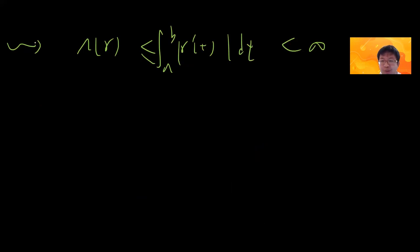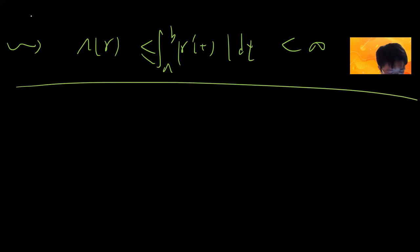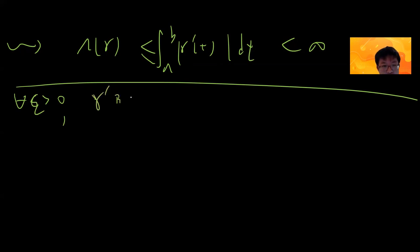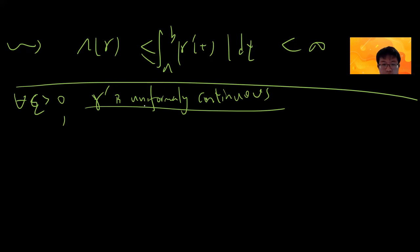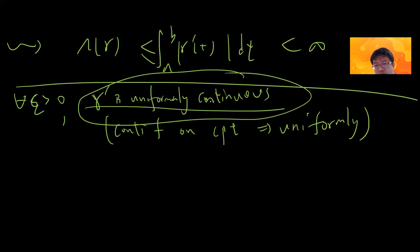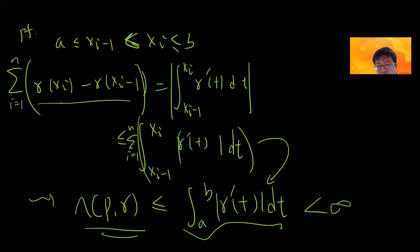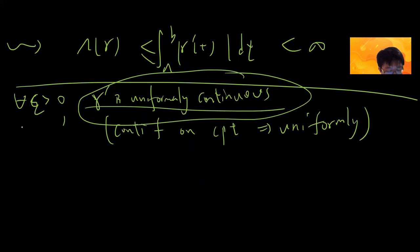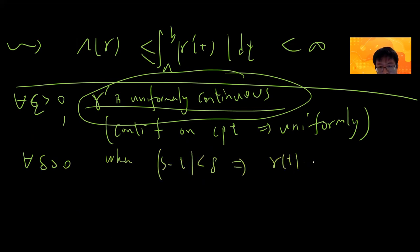Now comes the interesting part — the other direction. For epsilon greater than zero, we use the fact that gamma prime is uniformly continuous. The reason is that a continuous function on a compact set is uniformly continuous, which is why we need to assume gamma prime is continuous. This means there exists delta greater than zero such that when |s - t| < delta, |gamma'(t) - gamma'(s)| < epsilon. This delta is universal — that's what uniform continuity means.